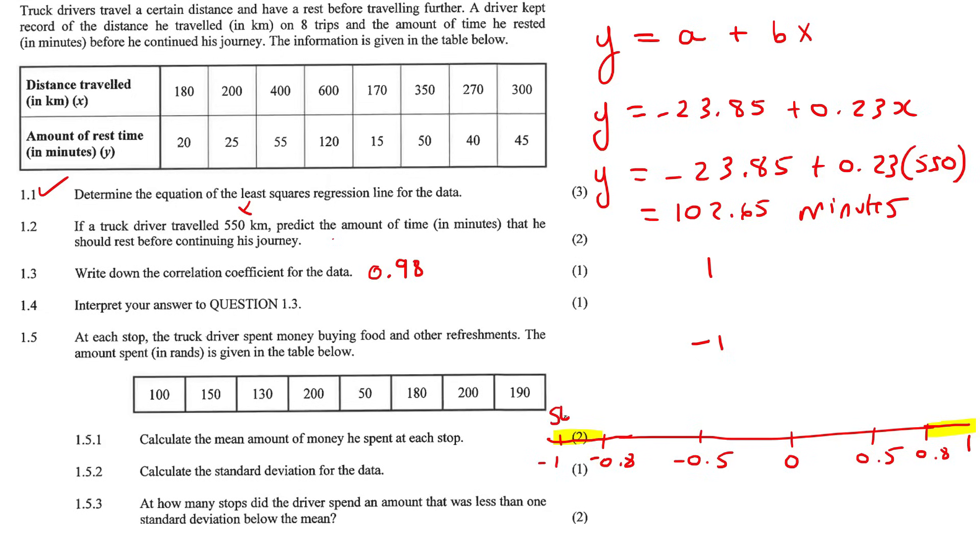The negative just means that the gradient is negative. It doesn't mean anything else, so that's strong. If you're getting 0.98, that is going to be strong. Now because it's positive, you must say positive. So you can say strong, positive, correlation.